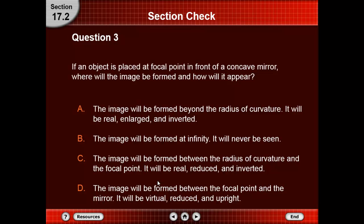Question number 3: if an object is placed at the focal point in front of a concave mirror, where will the image be formed and how will it appear? Option A: the image will be formed beyond the radius of curvature — real, enlarged, and inverted. Option B: the image will be formed at infinity and will never be seen. Option C: the image will be formed between the radius of curvature and the focal point — real, reduced, and inverted. Option D: the image will be formed between the focal point and the mirror — virtual, reduced, and upright.